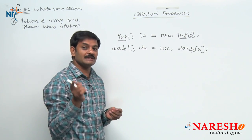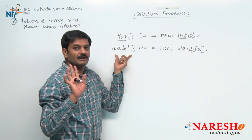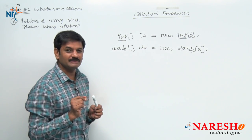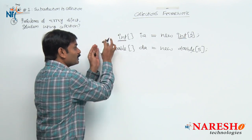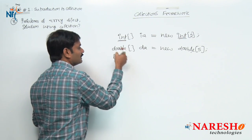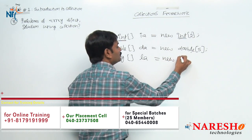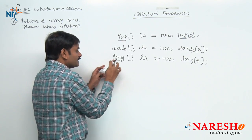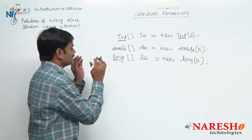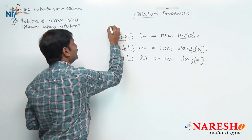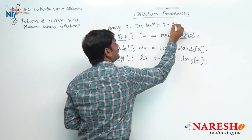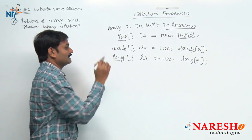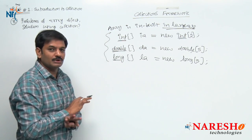I want to store 5 employees' mobile numbers — mobile number is of long type, large numbers. So: `long[] LA = new long[5]`. Please observe: long is a data type. For using this data type, am I writing any program behind? No. Straight away I can use the data type called long. Array is inbuilt in the language — you need not create any special class for representing data types int, double, and long. They are already available inbuilt. Array data type is inbuilt; you need not do any additional work.